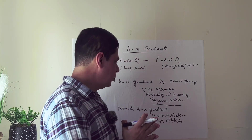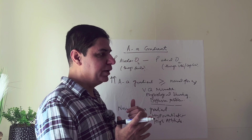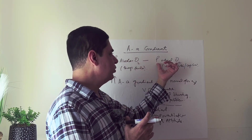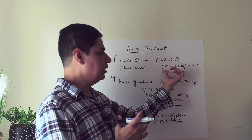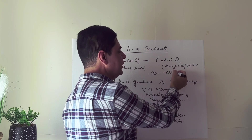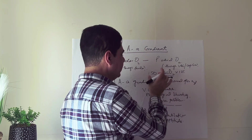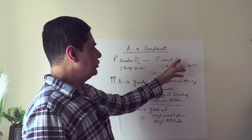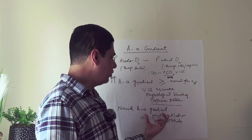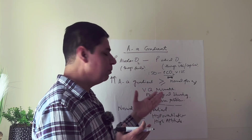In any patient with low O2 saturations, perform a capgas or arterial blood gas, then calculate the AA gradient — the difference between alveolar oxygen concentration and arterial oxygen concentration. The arterial value comes from your capgas strip. The alveolar value is calculated as 150 minus PCO2 (from the capgas strip) divided by 0.8, or multiplied by 1.25. Subtract the arterial O2 from this to get the AA gradient, then compare it against the age-normal value using the formula: age in years divided by 4, plus 4.